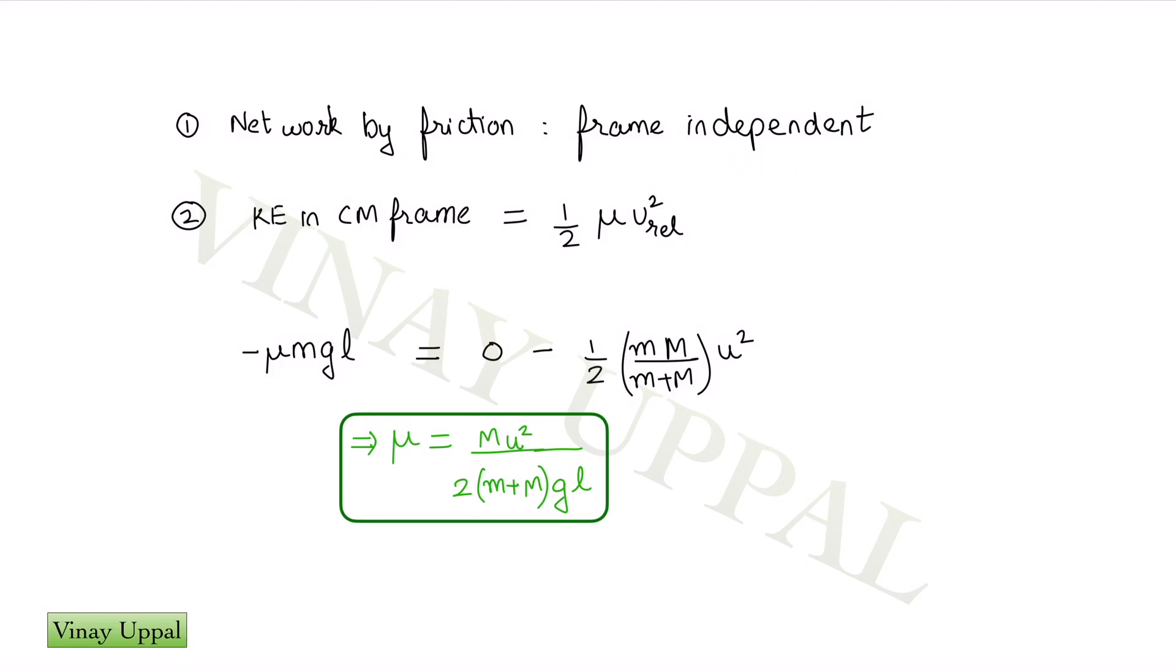The work done by friction is going to convert the mechanical energy into heat energy or thermal energy. And you can just imagine that the heat energy has to be independent of frame of reference. You cannot have a body getting hotter by different degrees or different amounts in different frames of reference.